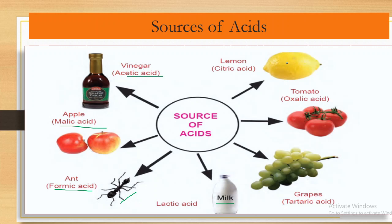In lemon, citric acid is present. In tomato, there is oxalic acid, and in grapes, there is tartaric acid. These are the different sources of acid you should know.